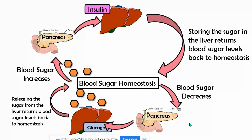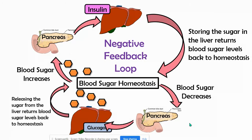We call this process a negative feedback loop. The reason it's called a negative feedback loop is because when the blood sugar rises, it brings us away from homeostasis, and we want to make that difference more negative — we want to bring it back to homeostasis.